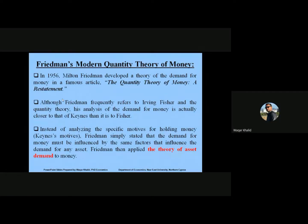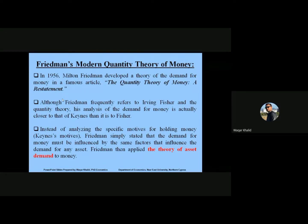In 1956, Milton Friedman developed a theory of the demand for money in a famous article titled 'The Quantity Theory of Money: A Restatement.' Although Friedman frequently refers to Irving Fisher and the quantity theory, his analysis of the demand for money is actually closer to Keynes than to Fisher. Friedman stated that the demand for money must be influenced by the same factors that influence the demand for any asset.